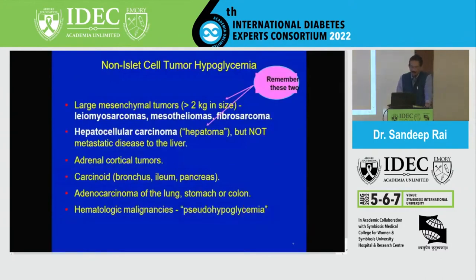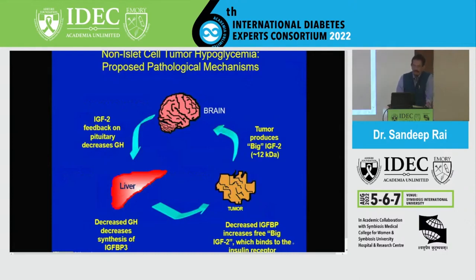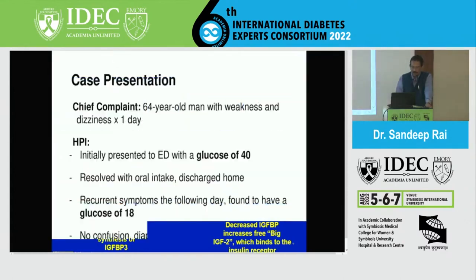The third important cause for the unwell patient is non-beta cell tumors — mainly mesenchymal tumors and hepatocellular carcinoma. There is no insulin, but these tumors are producing defective insulin-like growth factors. These defective IGFs do not attach properly to their binding proteins, escape into the tissues, and cause insulin release and hypoglycemia.